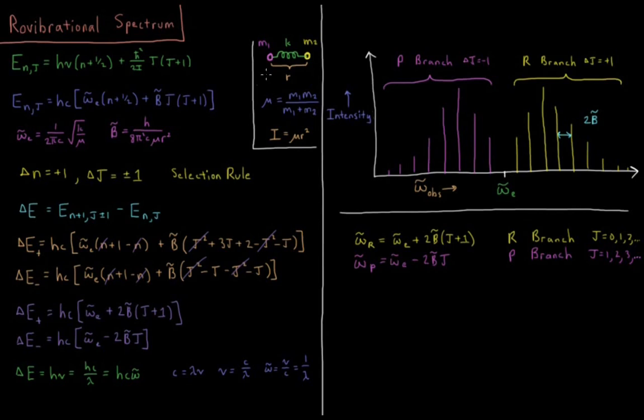So we're interested in transitions between these rovibrational energy levels, energy of rotation and vibration. So what is our selection rule here? The selection rule is that delta n, the change in our vibrational energy level, is plus 1. So we're absorbing a photon, this is an absorption spectrum. And delta j, change in our rotational energy level, can be plus or minus 1.